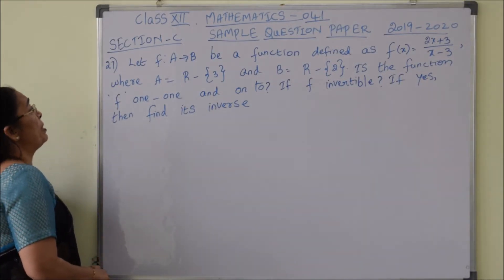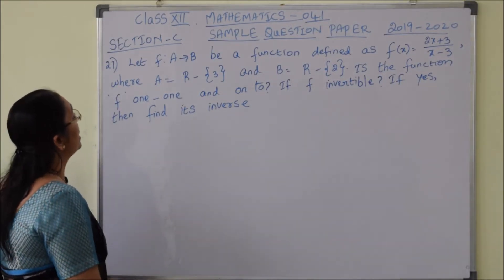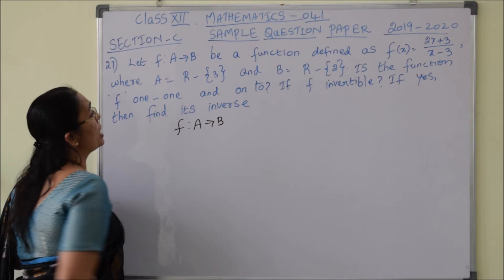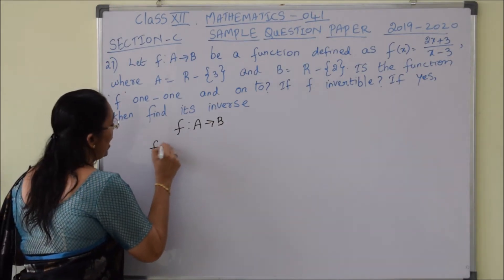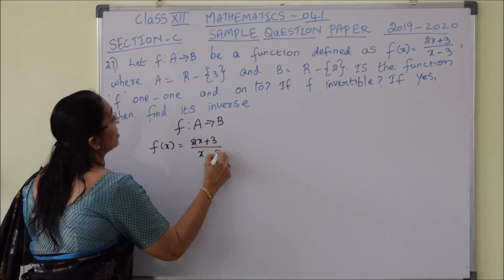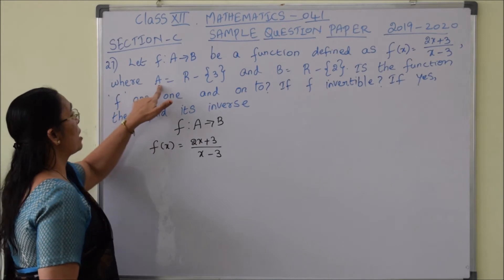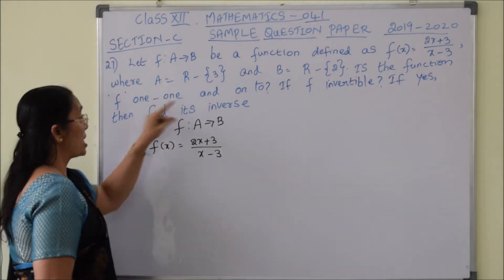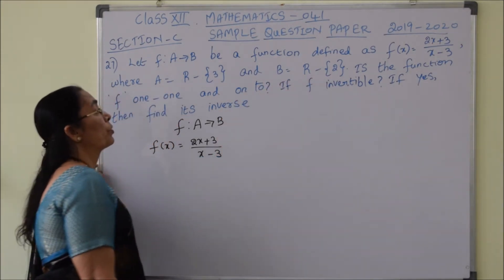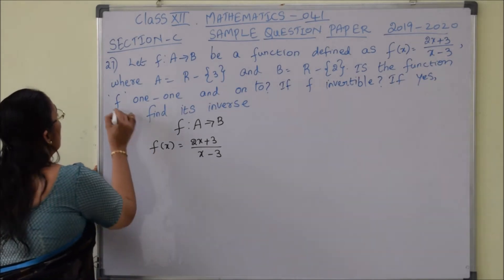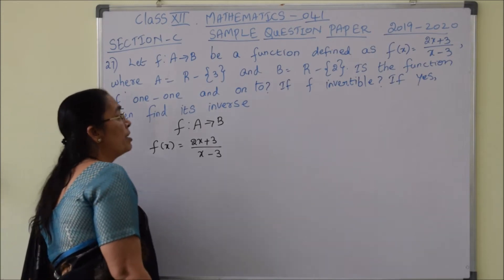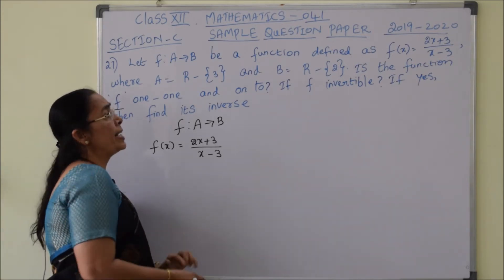Section C, question number 27. Let f be a function from A to B, defined as f(x) = (2x + 3) / (x - 3), where A = ℝ \ {3} and B = ℝ \ {2}. The question asks: is the function f one-to-one and onto? If f is invertible, find its inverse.